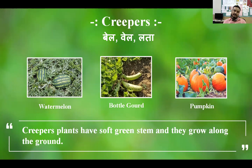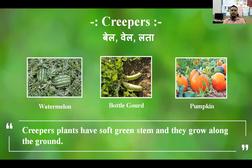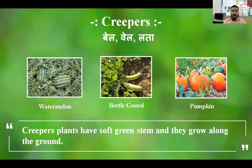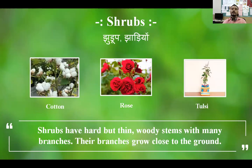Creepers and climbers are similar but different. Climbers can climb using the support of a wall or fence. But creepers don't climb — they just grow along the ground. Creepers are plants with a soft green stem and they grow along the ground.